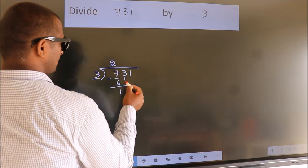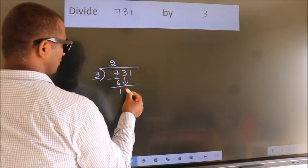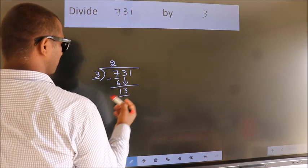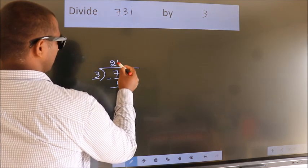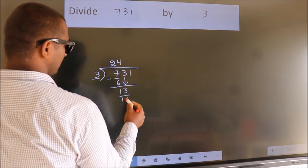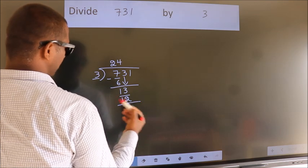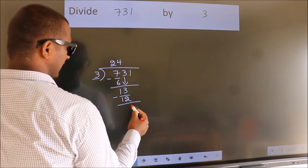After this, bring down the beside number. So 3 down. So 13. A number close to 13 in 3 table is 3 4's 12. Now we subtract. We get 1.